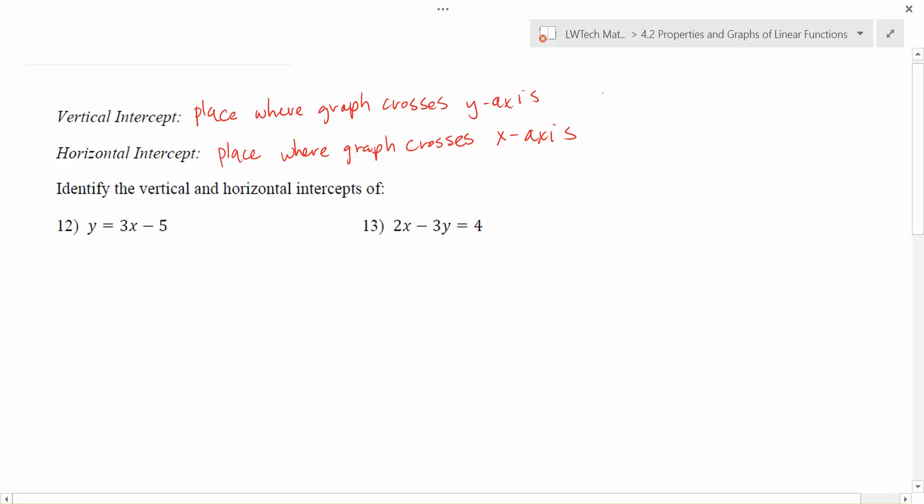Now, for linear functions, the vertical intercept is often easy to find. Because if you remember, if you have an equation in y equals mx plus b form, the y-intercept is just that b value. However, if your equation is not in this form, then you have to do some work to get it in that form and find the value for b.